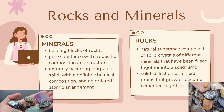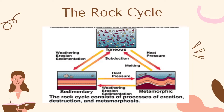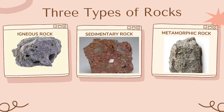Rocks are natural substances composed of solid crystals of different minerals that have been fused together into solid lumps — a solid collection of mineral grains that grow or become cemented together. Rocks are relatively hard, naturally occurring mineral material, consisting of a single mineral or several minerals either tightly compacted or held together by a cement-like mineral matrix. The rock cycle is a concept used to explain how the three basic rock types are related and how earth processes over geologic time change a rock from one type into another.